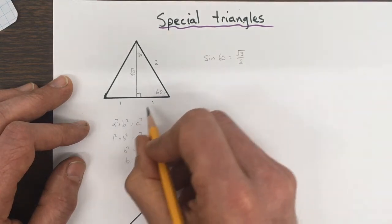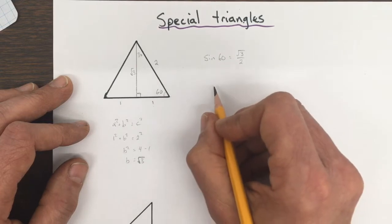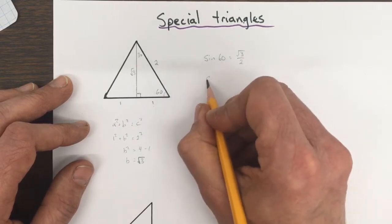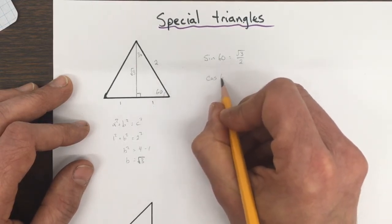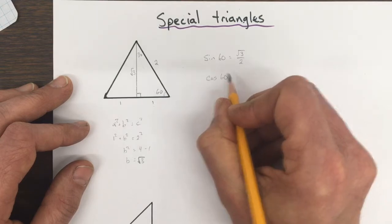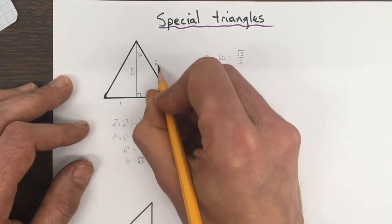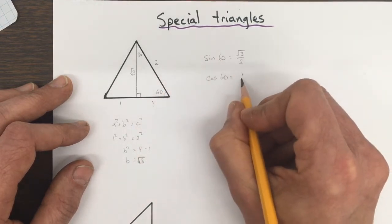It's not a decimal, it's an exact number written like that. The cos of 60 is equal to the adjacent over hypotenuse, so 1 half.